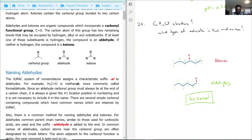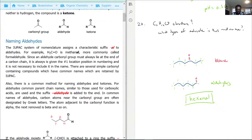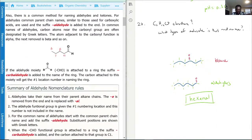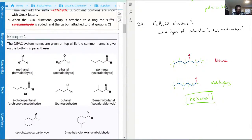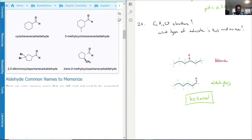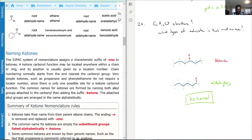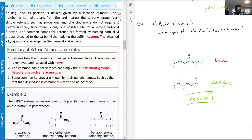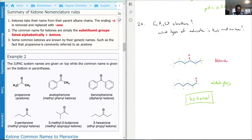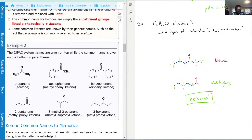Ketones have the -al for aldehydes. Now for ketones, we have... there we go. Ketones it's going to end with O-N-E. So it's just O-N-E at the end, and you put it where